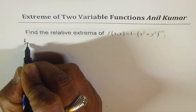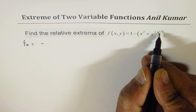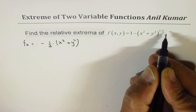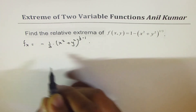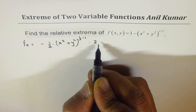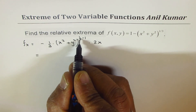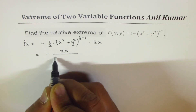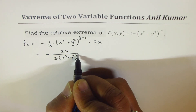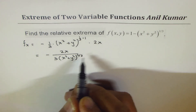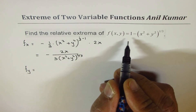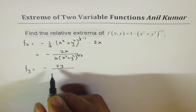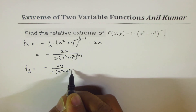Taking the partial derivative with respect to x: the derivative of 1 is 0, so we apply the chain rule — (1/3)(x² + y²)^(1/3 - 1) times 2x — giving us -2x / [3(x² + y²)^(2/3)]. Similarly, the partial derivative with respect to y is -2y / [3(x² + y²)^(2/3)].